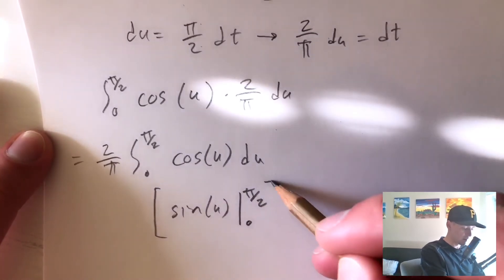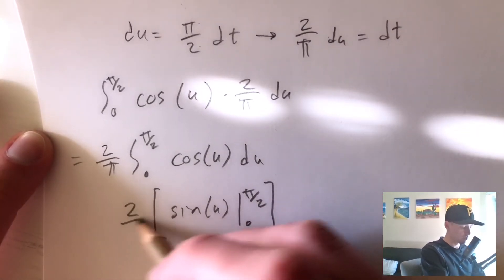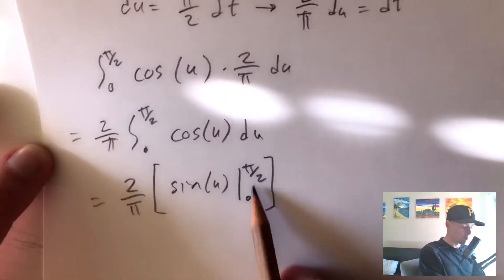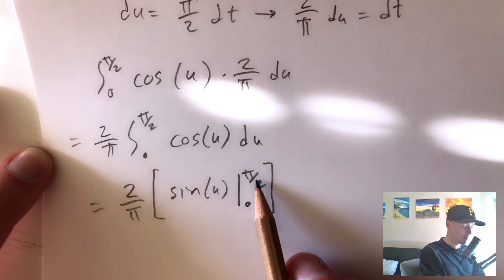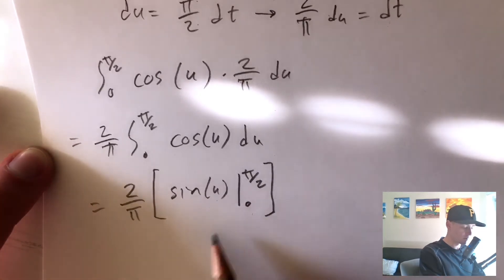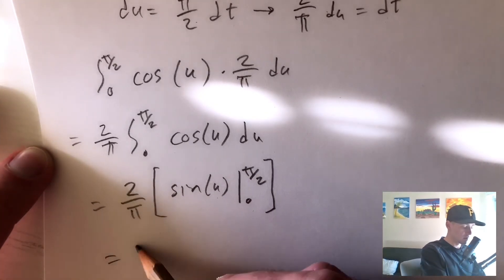And then remember, this whole thing is going to be multiplied by 2 over pi. So evaluating from this upper bound to this lower bound basically just means plugging in the upper bound, plugging in the lower bound, and subtracting.